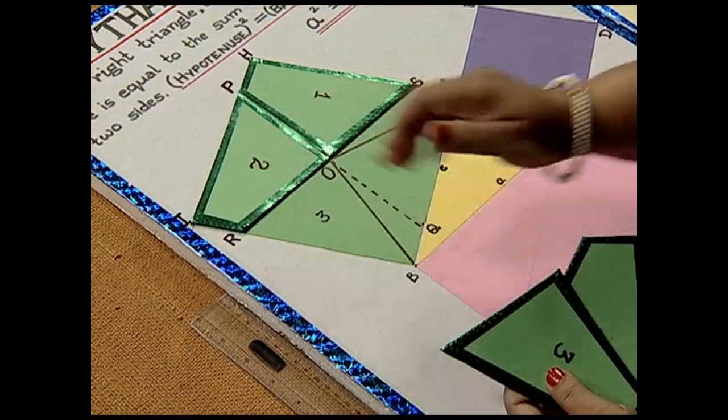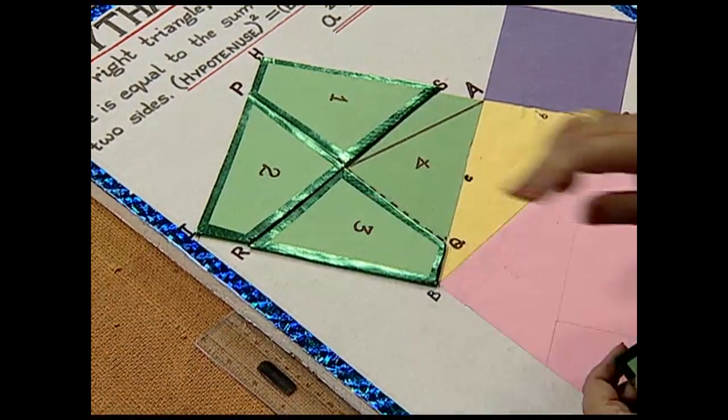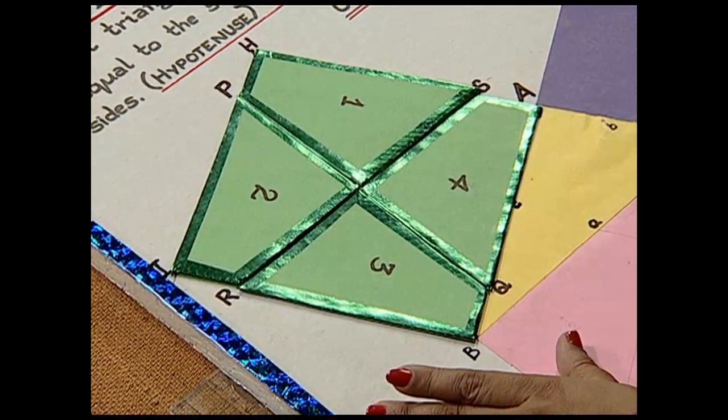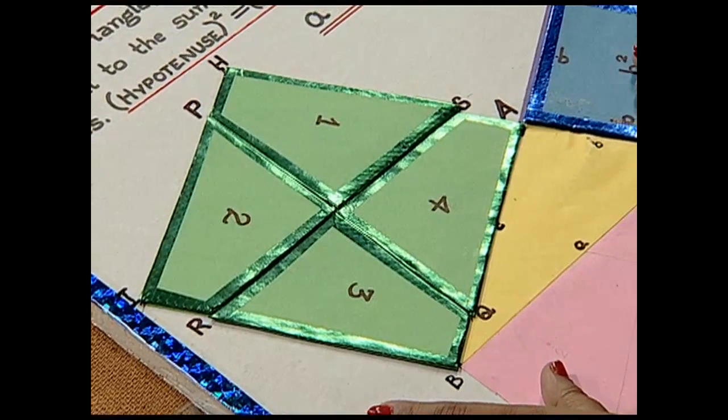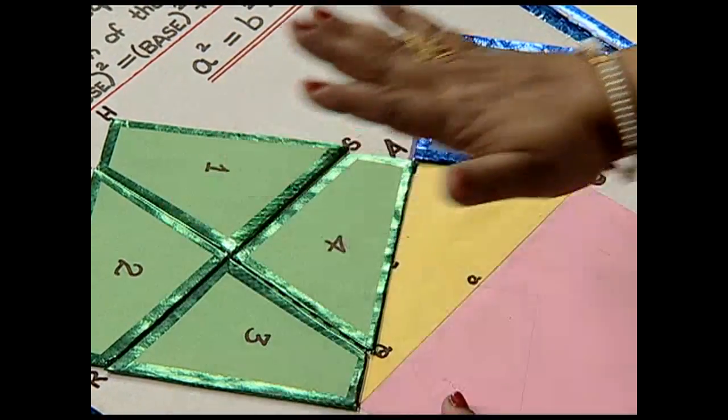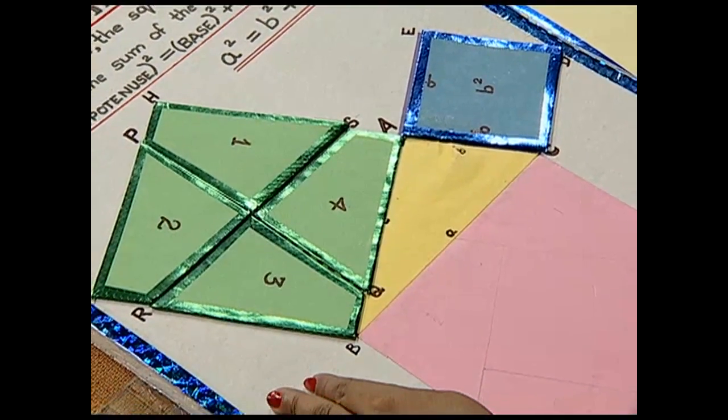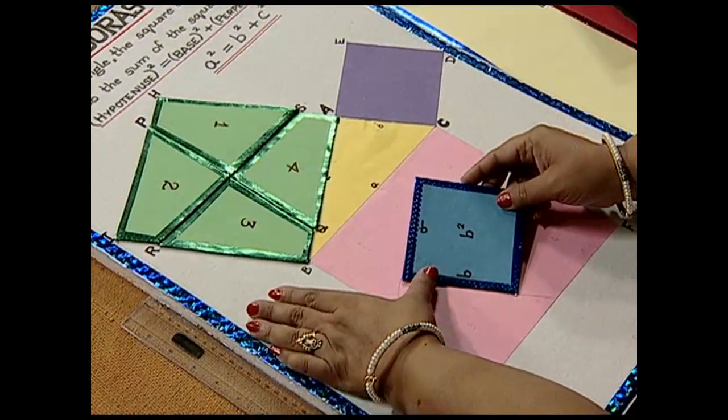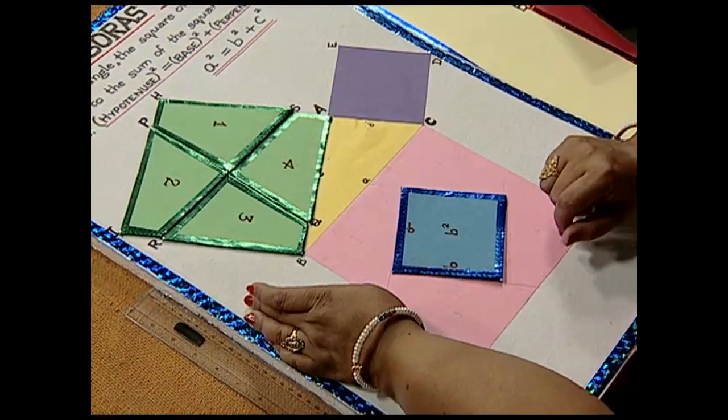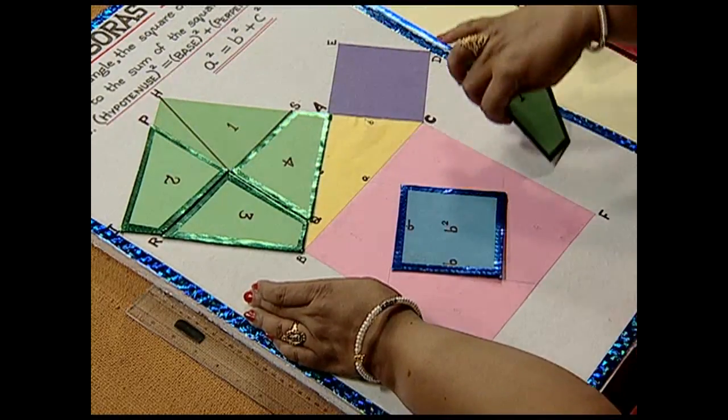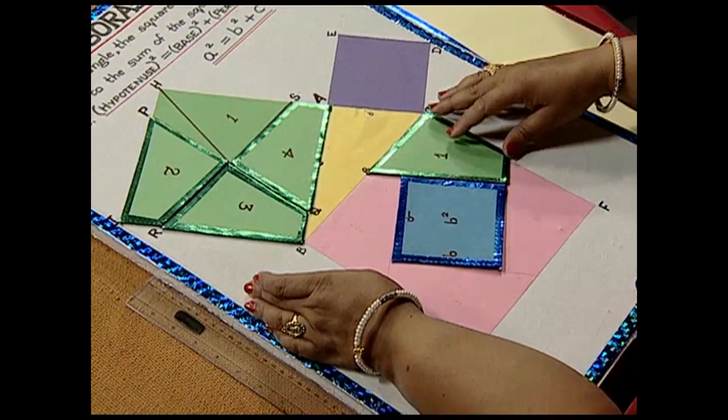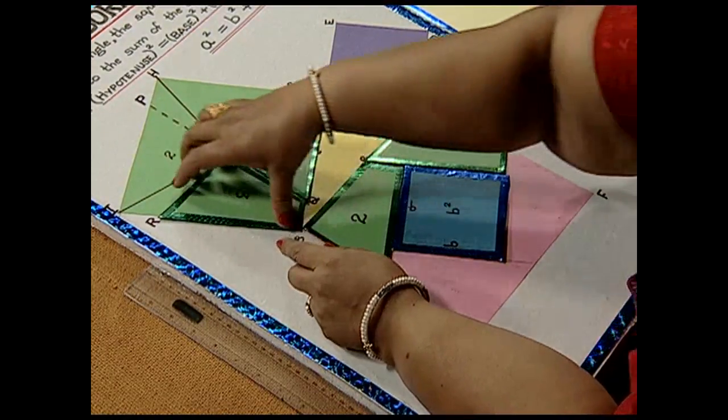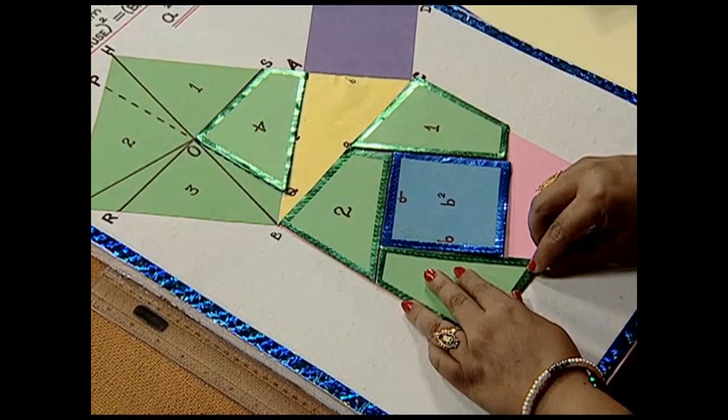Here comes a second quadrilateral, this is a third quadrilateral, and here comes a fourth quadrilateral. Now in order to verify our result, we need to arrange these squares - that is square b² - and also these four quadrilaterals on the bigger square, that is BCFG. How do we do that? First we pick up the cutout with area b² and place it at the center this way. Now we will arrange these pieces in this manner so that they completely overlap the square.